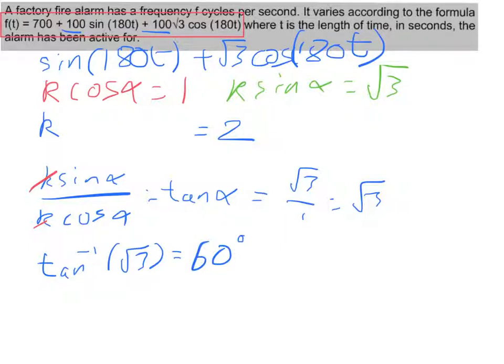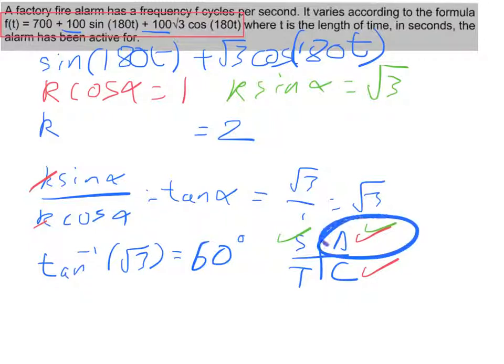We just need to check we've got the right answer there though. We need to check we've got the answer in the right quadrant. So cosine is positive, so alpha could be in the first or fourth quadrant. Sine is also positive, so that could be in the first or the second. So straight away we can see we are dealing with alpha in the first quadrant.